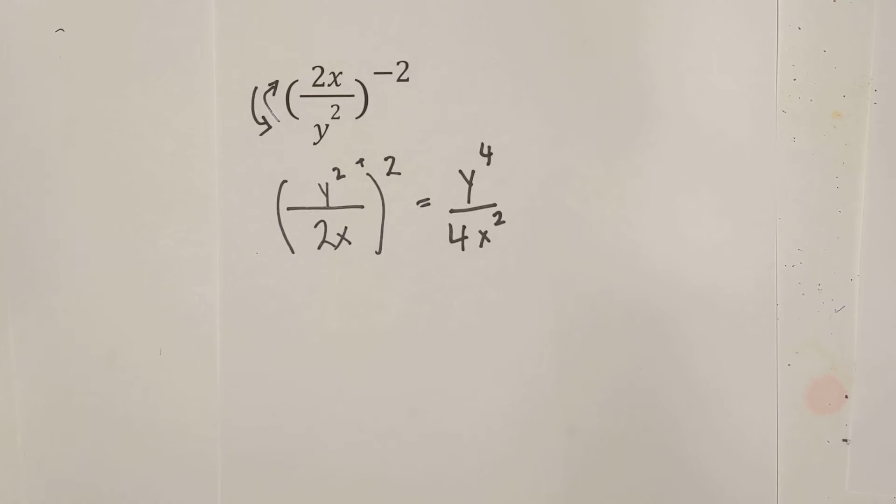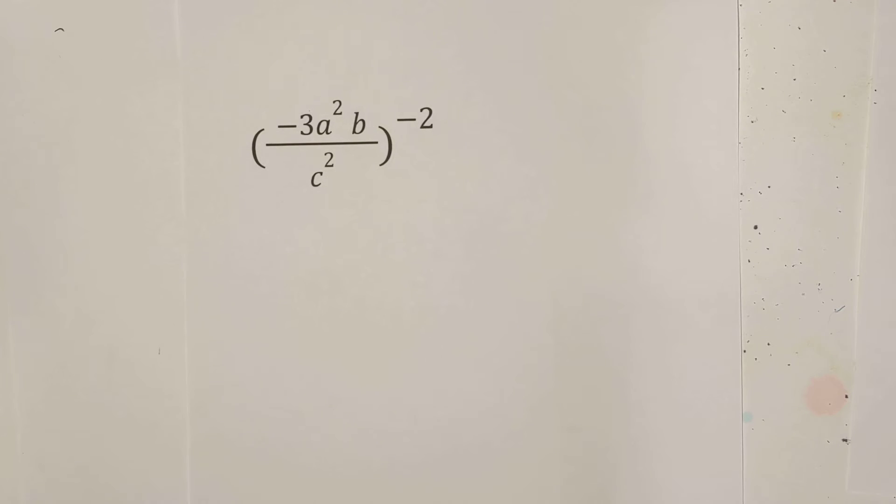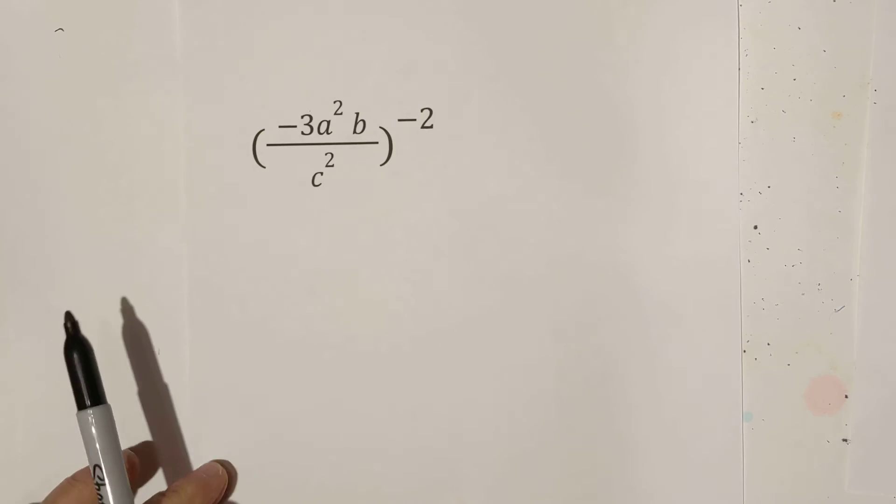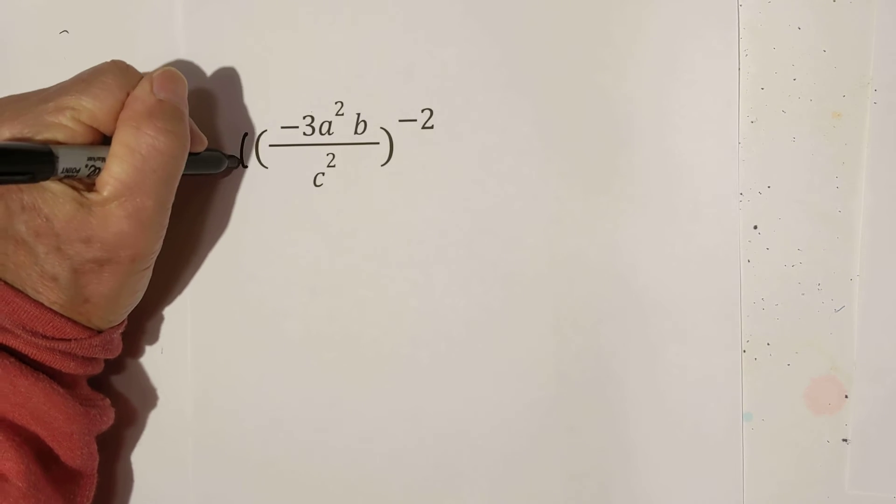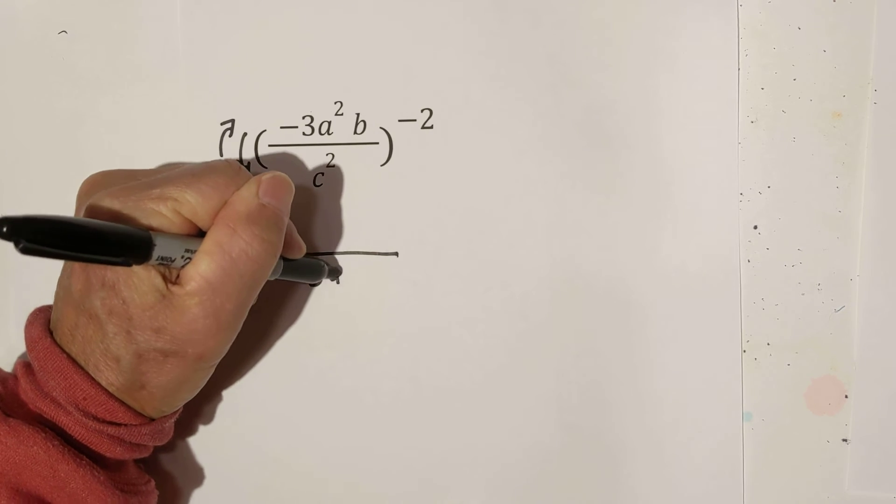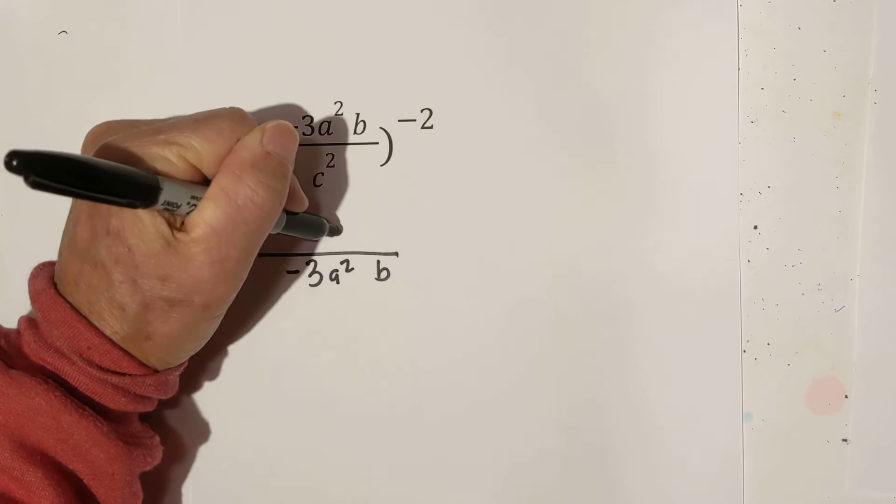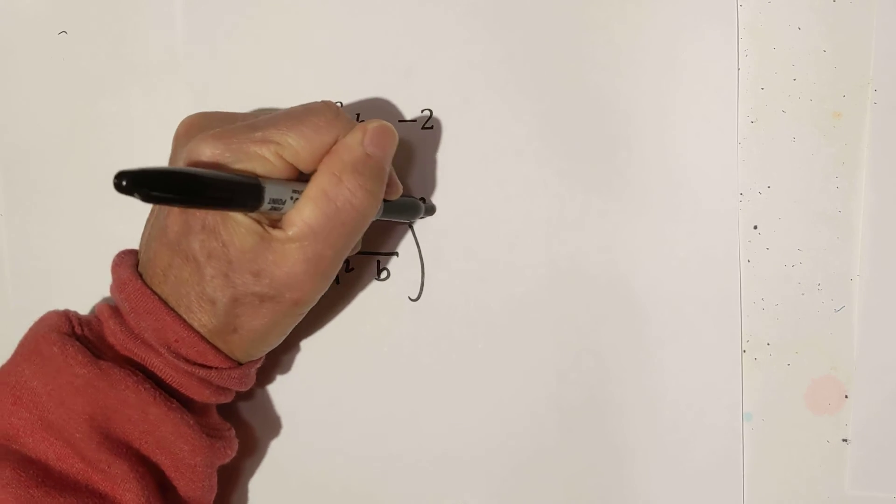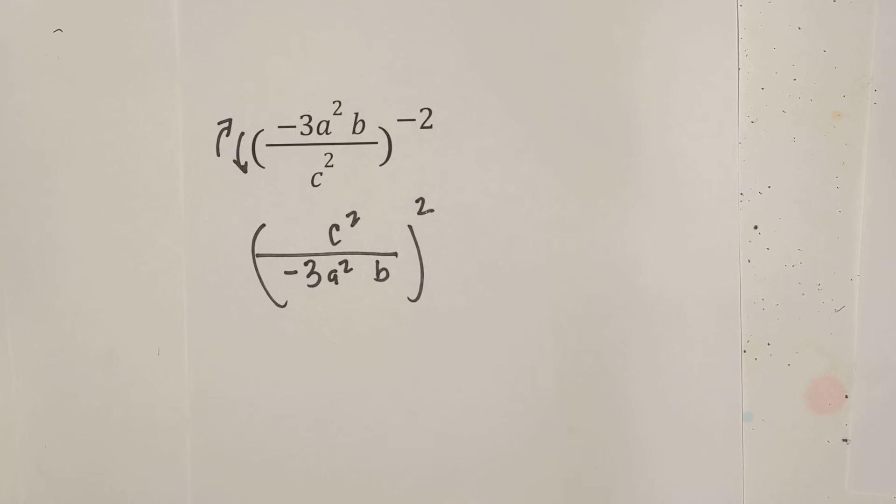Let's look at another example. Okay, this one we have all kinds of stuff going on. We have a negative exponent here. So let's flip-flop. Okay, so this becomes negative 3a squared b, and this is c squared. And the negative now becomes a positive. We've rewritten it.